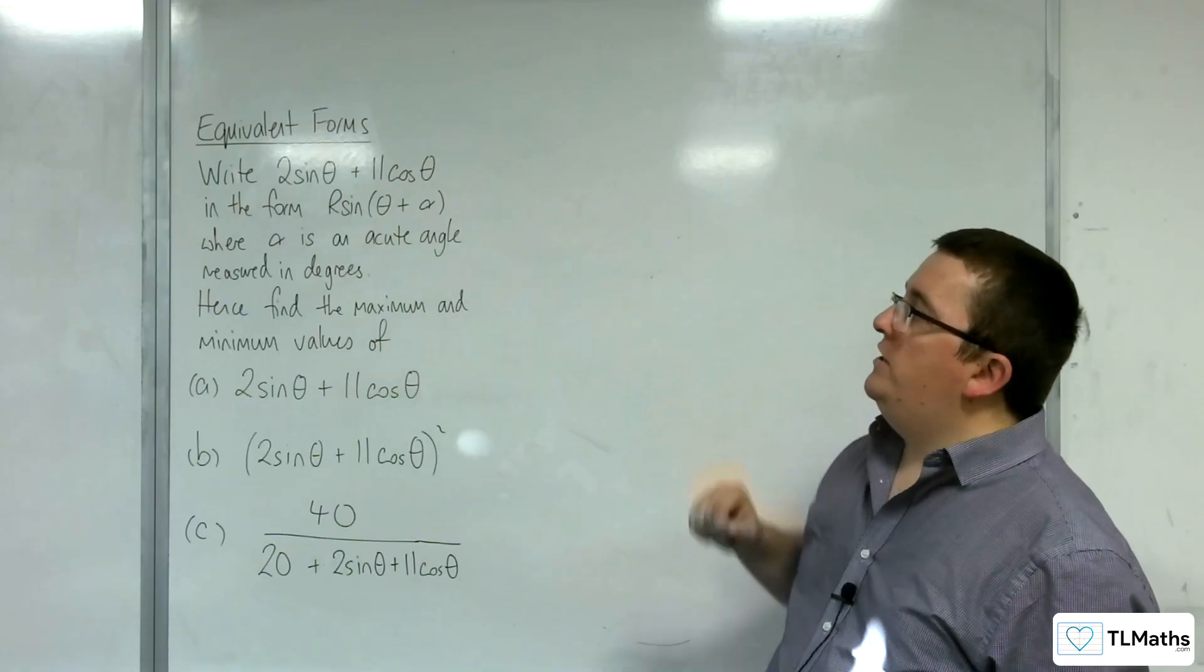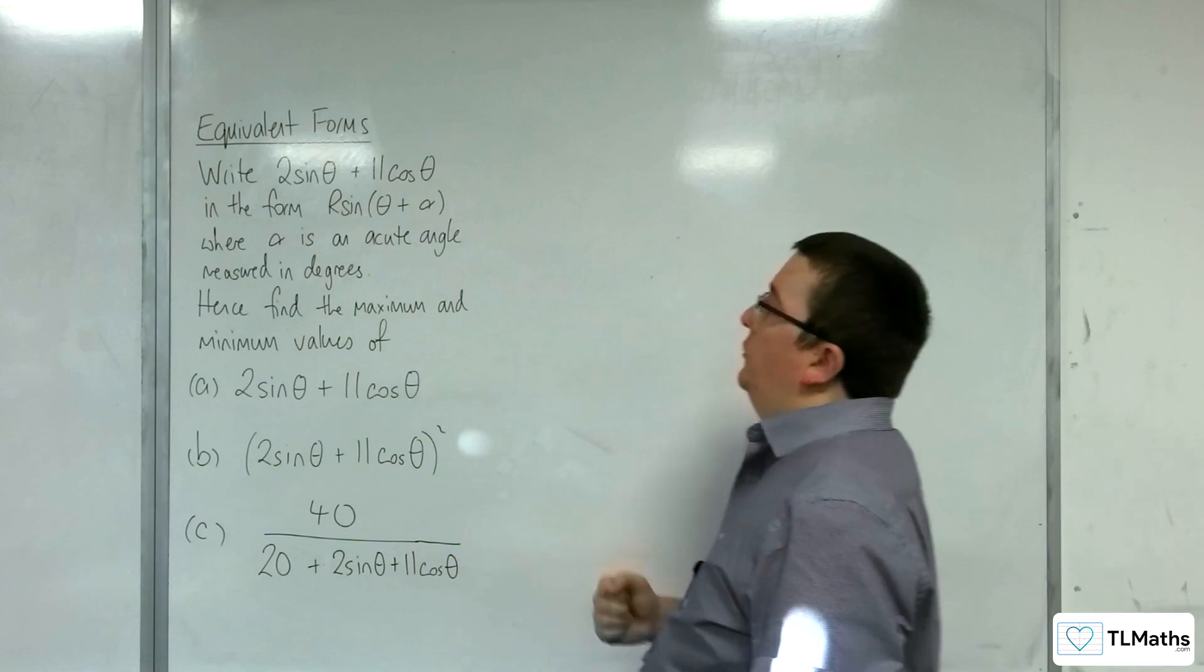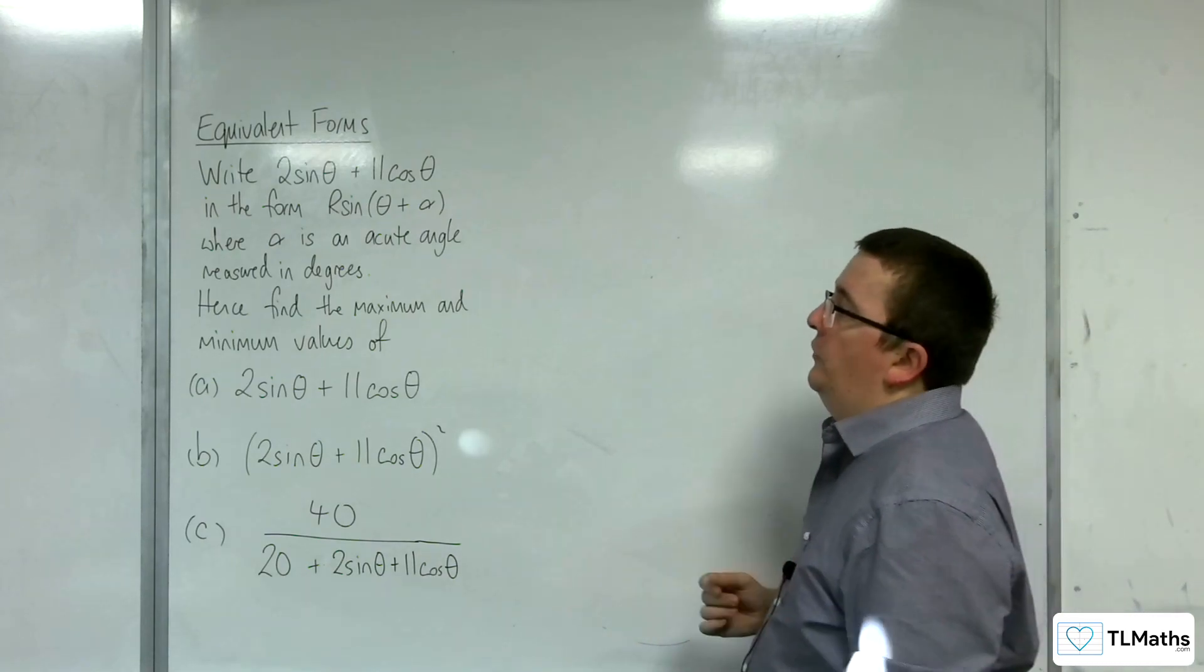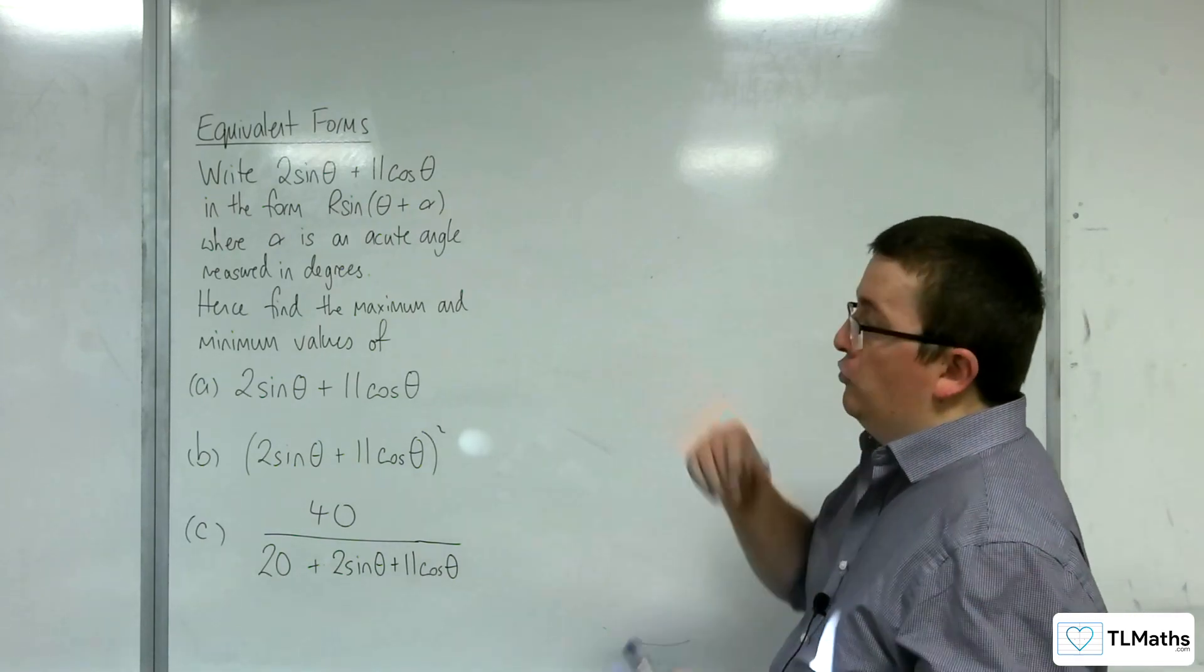So the first thing, write 2 sine theta plus 11 cosine theta in the form R sine theta plus alpha, where alpha is an acute angle measured in degrees.